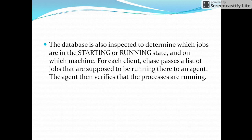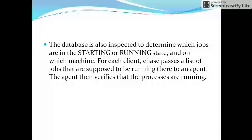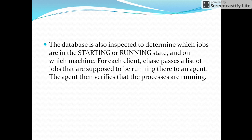The database is inspected to determine which jobs are in the starting or running state and on which machine. For each client, chase passes a list of jobs that are supposed to be running there to an agent. The agent then verifies that the processes are running. For the chase command to run, the database should be up. If the database is up, chase will communicate to the remote agent and collect information about which jobs are about to be running or starting.